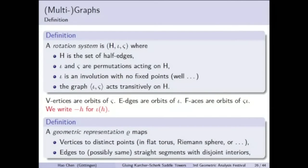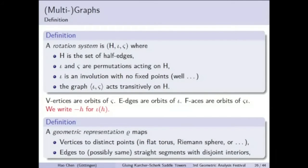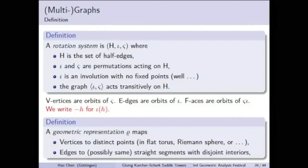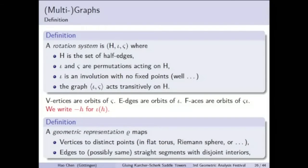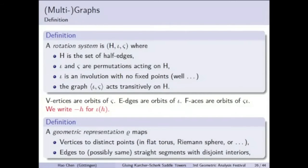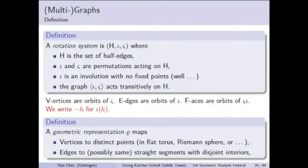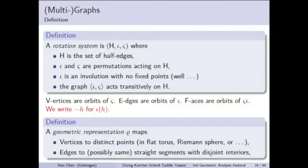In our representation, edges either have disjoint interiors or they could be mapped to the same segment. That is because we want to include the possibility that the wings are parallel, as we will see later.